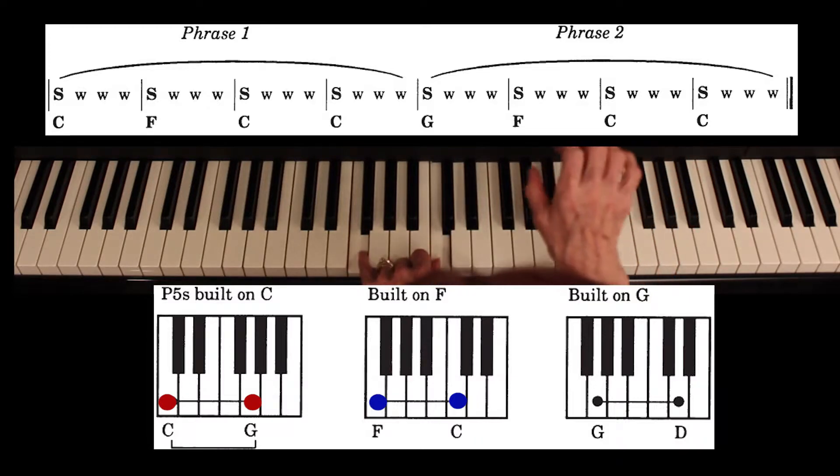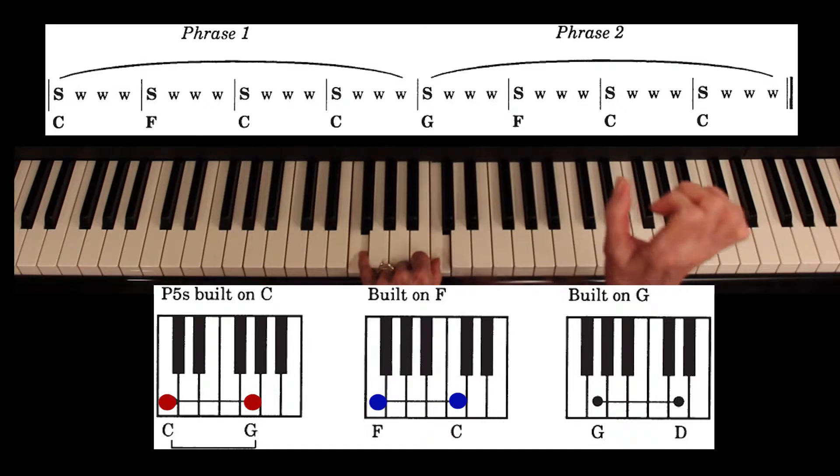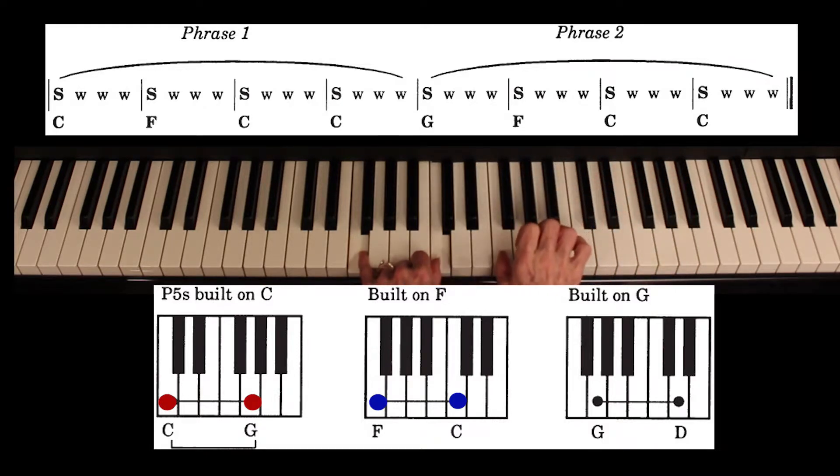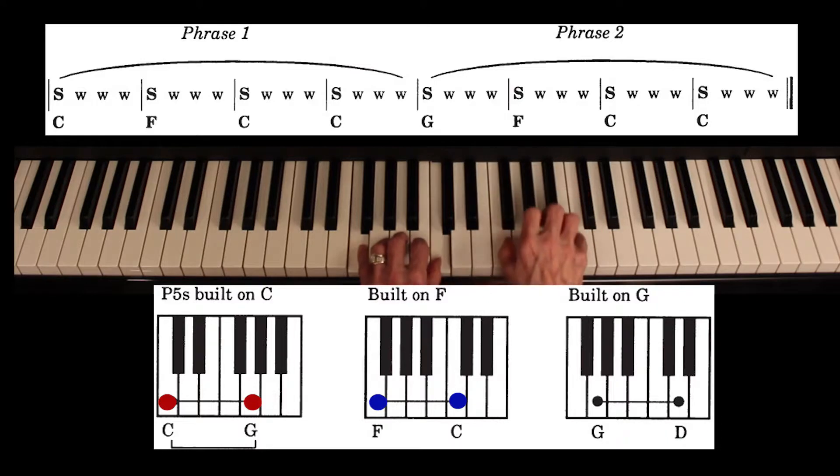Now find that perfect fifth, root F, one octave higher. Leave the left hand there so you can refer to it. Perfect fifth, right hand with the pinky. So now I've got perfect fifth on F, root of F, perfect fifth, one octave higher.